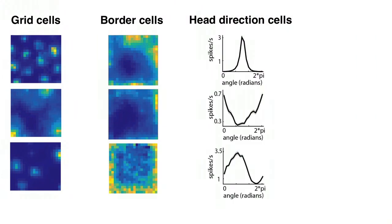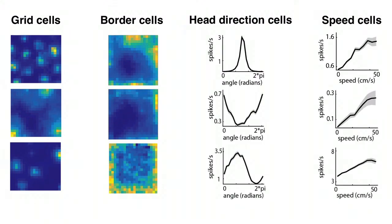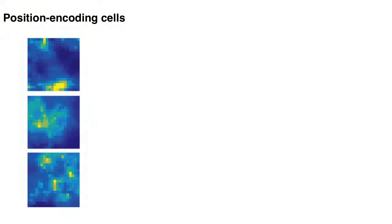After learning the tuning properties of all the neurons in our data set, we then analyzed the model output. While we saw many of the same tuning properties that previous labs have identified, like grid cells, border cells, classic head direction cells, and speed cells, we also saw cells with unconventional tuning curves.